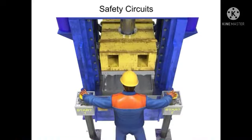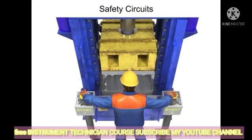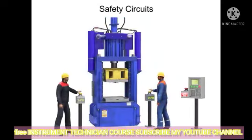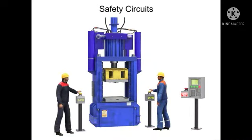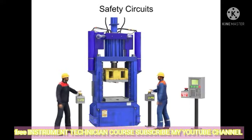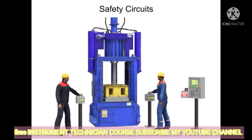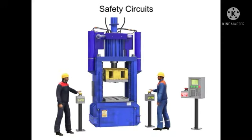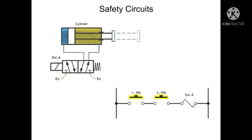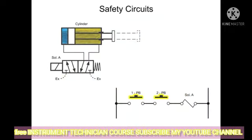Two-hand controls can also describe a machine that requires two separate operators typically located on opposite sides of the machine. Both operators must be in place to allow the machine to start its cycle. For this type of machine, two-hand operation controls typically consist of two push buttons wired in series.